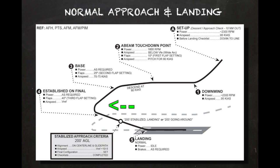When the aircraft reaches 200 feet above the ground, the pilot must confirm that the approach is stabilized. If so, he or she must state: '200 feet, approach stable, landing.' If any stabilized approach criteria has not been met at 200 feet above the ground, the pilot must execute a go-around. The callout would be: '200 feet, approach unstable, going around.'